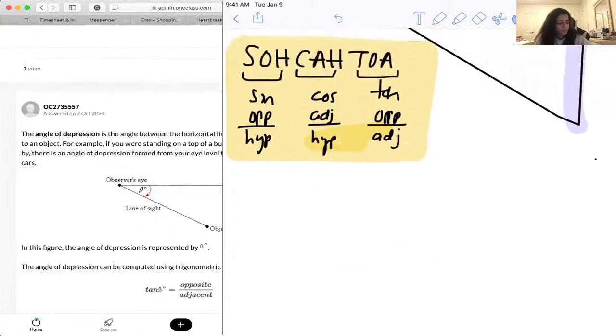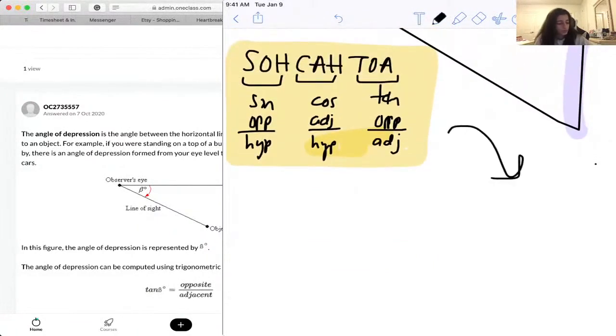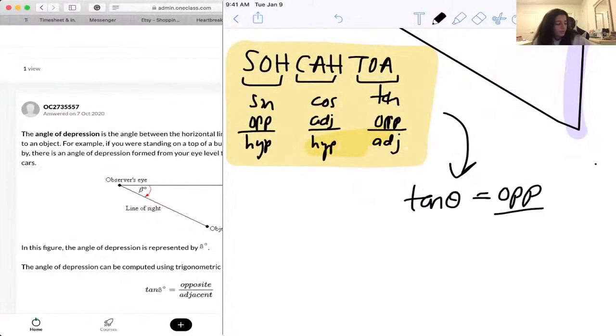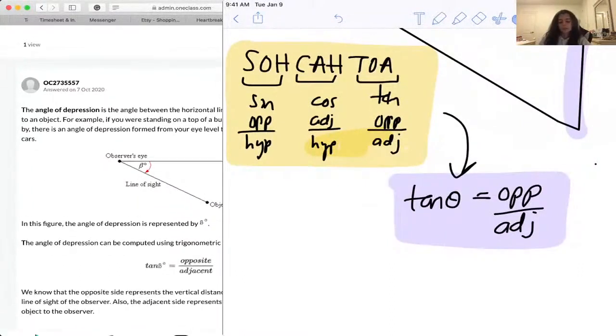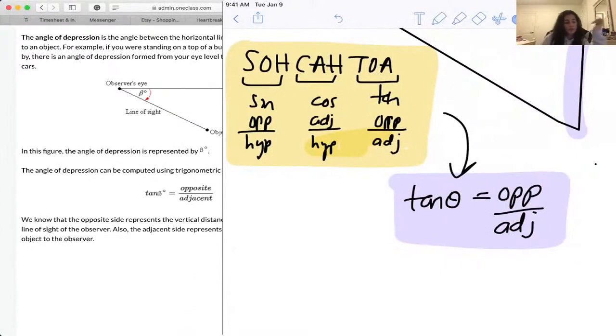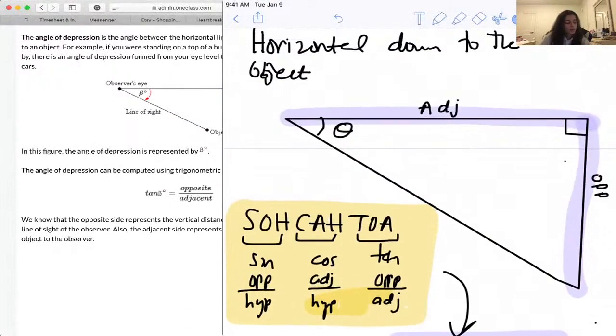Now, kind of going from what I said here, tan of your angle, so the angle of depression, is equal to opposite over adjacent. So you can calculate the angle of depression if you have your opposite and adjacent.